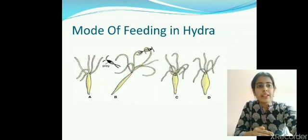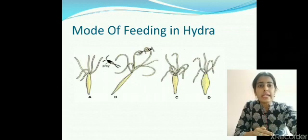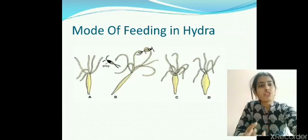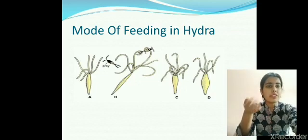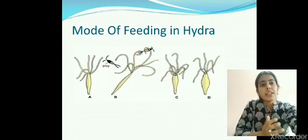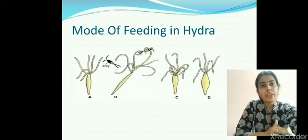Now, the mode of feeding in hydra. Hydra is a water animal — it is not unicellular but a multicellular organism. It has a hollow body cavity and at its mouth it has lots of tentacles. These tentacles have special stinging cells which have the capability to paralyze or kill the prey. When the food is trapped by the tentacles of hydra, it is pushed with the flow of water inside the body cavity where digestive juices are secreted. The food is digested and absorbed by the body cells, and waste products are thrown out again with the help of flowing water.